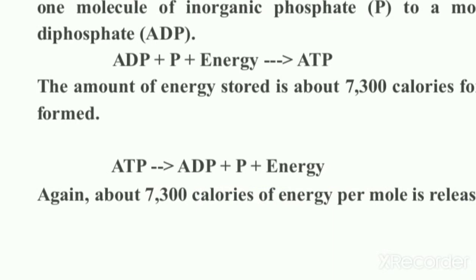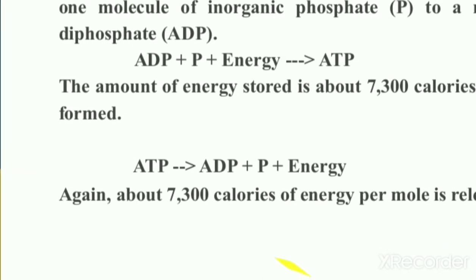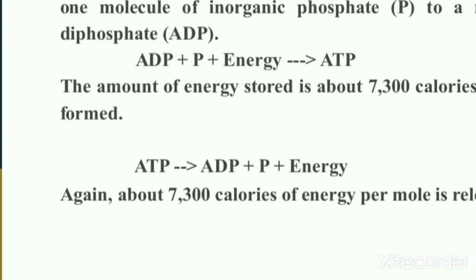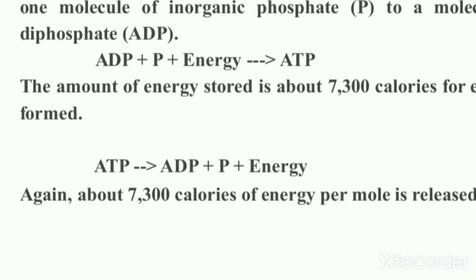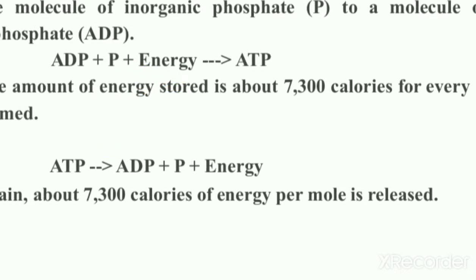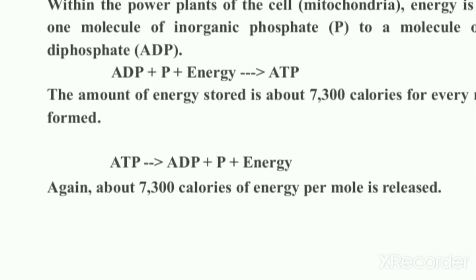To convert ADP to ATP requires about 7,300 calories for every mole of ATP formed. At the energy-requiring side, the phosphate group in the tail of the ATP molecule is broken off and the energy in the bond is then liberated. The reverse reaction — ATP → ADP + inorganic phosphate + energy — also releases about 7,300 calories of energy per mole.